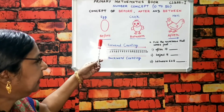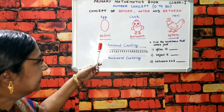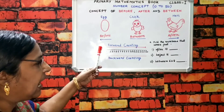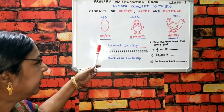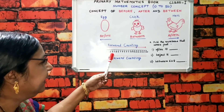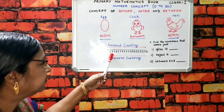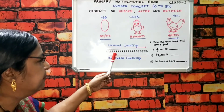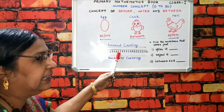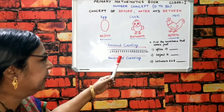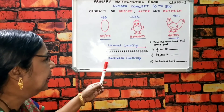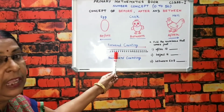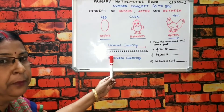Toh hum logon ko yeh pata lagana hai — fill in the numbers that come just after. Just after two kya hota hai? Three. Just after two kya hota hai? Three. Hum log jab forward counting dekhte hain, toh hum logon ko after wala number pata chalta hai. Five ke after kya hota hai? Aur jab hum log backward counting dekhte hain, toh before wala number pata chalta hai. What comes before? Seven — six. B for backward counting, B for before.